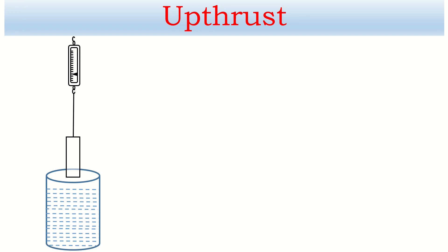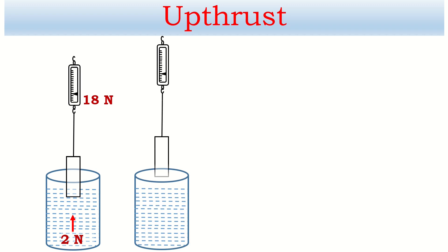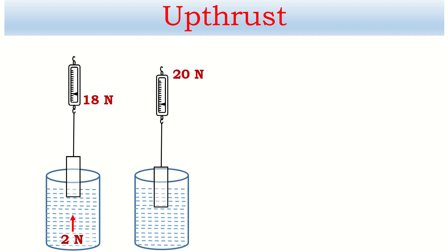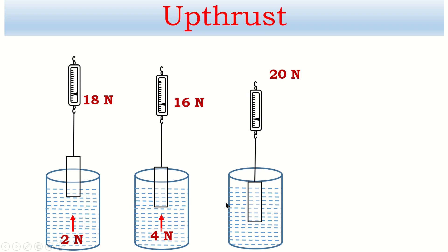This can be understood more clearly with an example. A body is weighed in air, then partially immersed in water. When the immersed part is small, say the upthrust is 2 Newtons, the weight reduces by 2 Newtons — it becomes 18 Newtons. If the same body is immersed a little more, the volume immersed is greater, so upthrust increases to 4 Newtons, reducing the weight to 16 Newtons. Immersing it even more gives more upthrust, reducing the weight further to 14 Newtons.